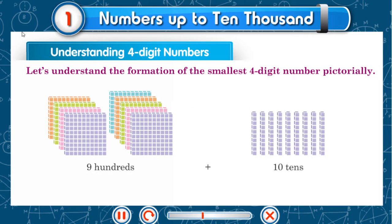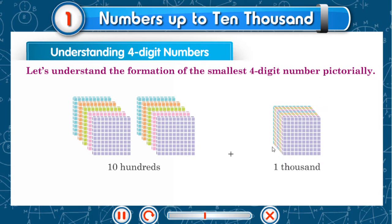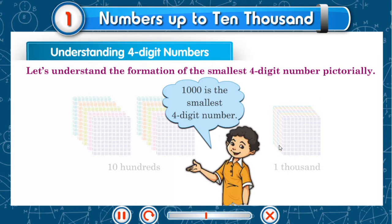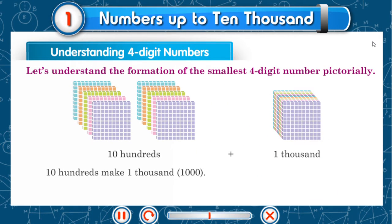9 hundreds, 10 tens, 10 hundreds, 1,000. 1,000 is the smallest 4-digit number. 10 hundreds make 1,000: 1, 0, 0, 0.